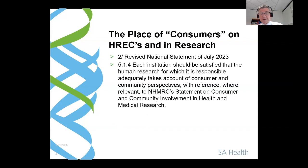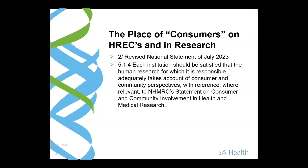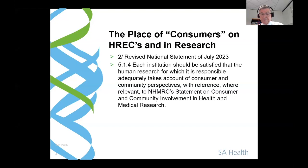The other document is the revised National Statement of July 2023. Section 5.1.4 now says each institution should be satisfied that the human research for which it is responsible adequately takes account of consumer and community perspectives, with reference where relevant to the NHMRC statement. The National Statement and the NHMRC document align. How you do that is not specified — it's up to the institution to decide, whether that's before, during, or after research.